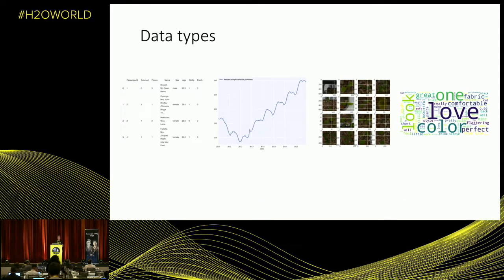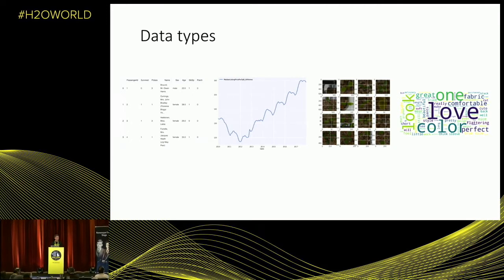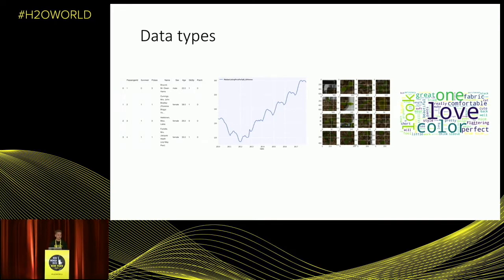Speaking about different data types in machine learning, there are four major data types: tabular data, time series, images, and text. Driverless AI could already work with tabular, time series, and text. So the logical next step is to make it work with images, which is what we are doing right now.